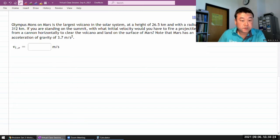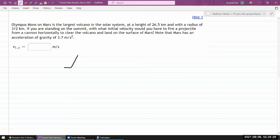So it says the Olympus Mons on Mars is the largest volcano in the solar system. Okay, so we're talking about a mountain at a height of some kilometers with a radius of